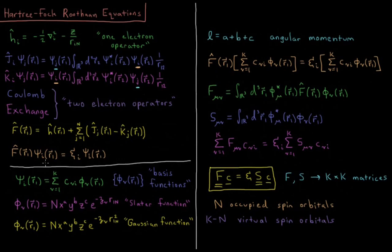So that's the Hartree-Fock equations thus far, and we've mentioned nothing about the shape or form of these atomic orbitals yet. In practice, you really can't solve this equation without some kind of basis set — this is a very complicated function in three dimensions, and these operators are very complicated. So the odds that you're going to solve it analytically are basically zero. So we introduce the linear variational method: we assume that each atomic orbital is a linear combination of basis functions, a sum from nu equals 1 up to k, of the coefficient c_{nu,i} times basis function phi_nu for electron 1.